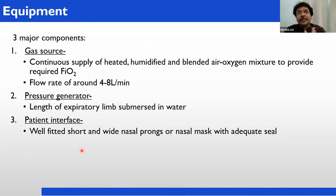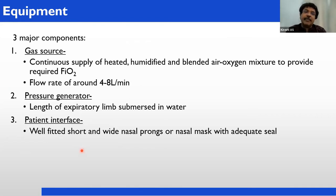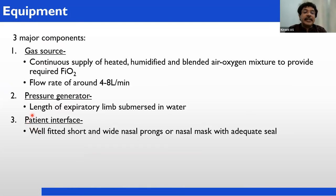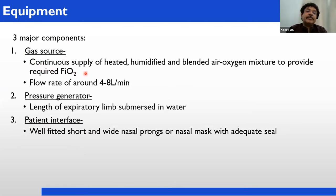Coming to equipment: CPAP has three major components. One is the gas source — from the oxygen source to the blender, providing a continuous supply of heated, humidified, blended air-oxygen mixture. From central oxygen or oxygen cylinder, oxygen will come; the blender collects air, mixes it with oxygen, and sends the blended air-oxygen mixture to the humidification chamber.